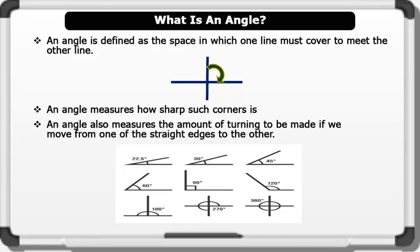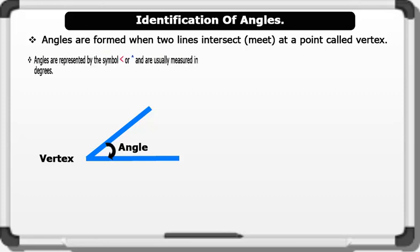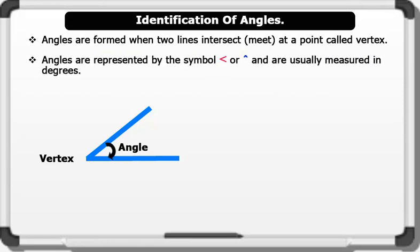Identification of angles: Angles are formed when two lines intersect or meet at a point called vertex. The measure of the opening between these two lines is called an angle. Angles are represented by the symbol and are usually measured in degrees.